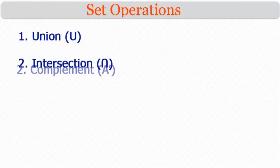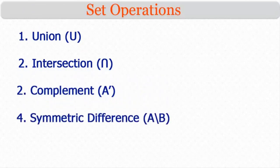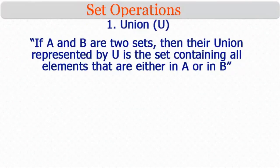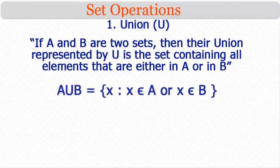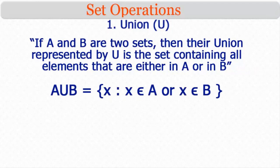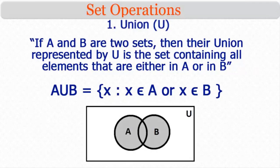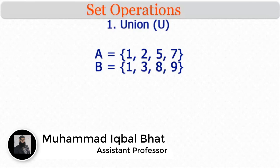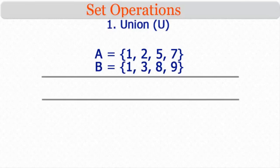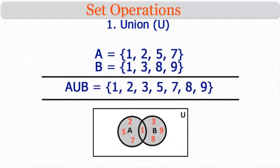The basic set operations are union, intersection, complement, and symmetric difference. First, the union of sets: if A and B are two sets, their union — represented by A ∪ B — is the set containing all elements that are either in A or in B. That is, A ∪ B = {x : x ∈ A or x ∈ B}. The shaded portion in the Venn diagram represents the union of A and B. For example, if A = {1, 2, 5, 7} and B = {1, 3, 8, 9}, then A ∪ B = {1, 2, 3, 5, 7, 8, 9}.